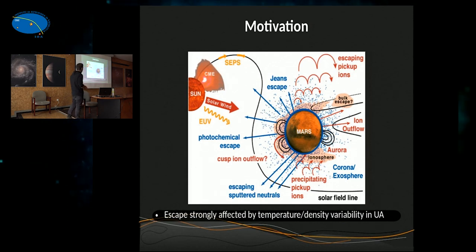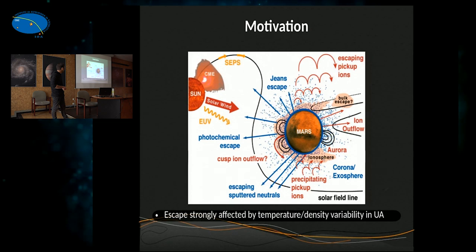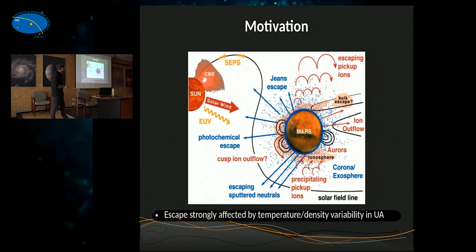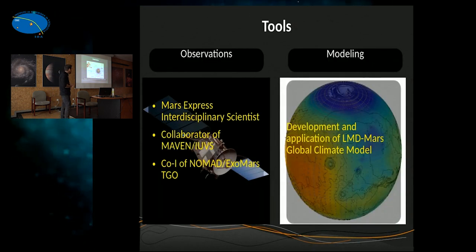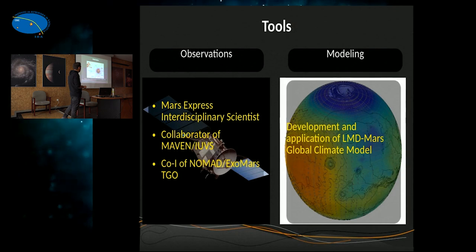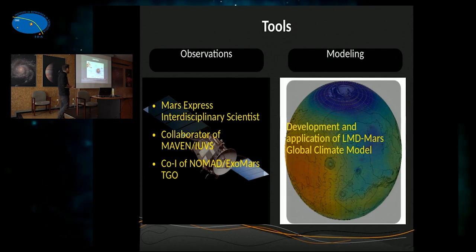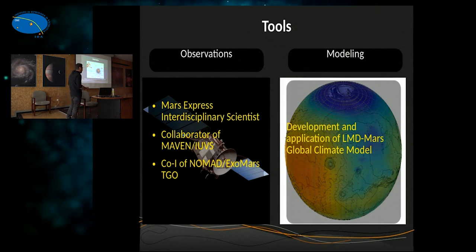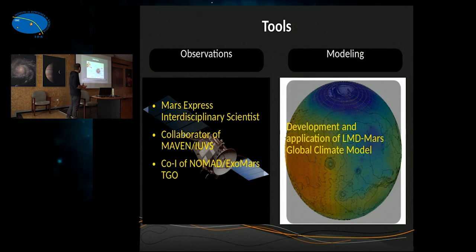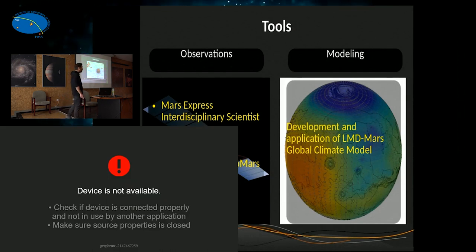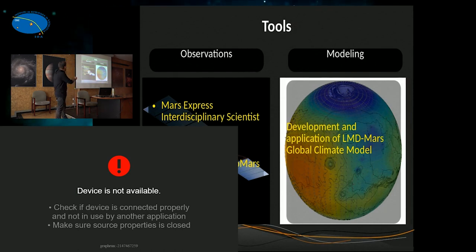There are many different processes producing atmospheric escape to space. All of them virtually depend on the conditions of the upper atmosphere — the temperature and density. Characterizing the variability of the upper atmosphere today and the induced variability on atmospheric escape is very important to understand how much atmosphere was lost through Martian history and to get information about what the Martian climate was like in the past.